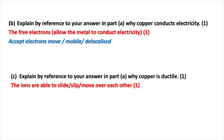Part B asks you to explain, by reference to your answer in part A, why copper conducts electricity. This is a one-mark question. You need to refer to the free or delocalized electrons — it is these delocalized electrons which allow the metal to conduct electricity. For part C, you're asked to explain why copper is ductile, also one mark. You need to say that the ions are able to slide, slip or move over each other.